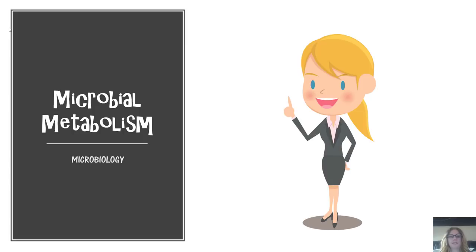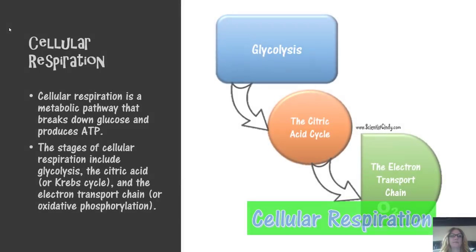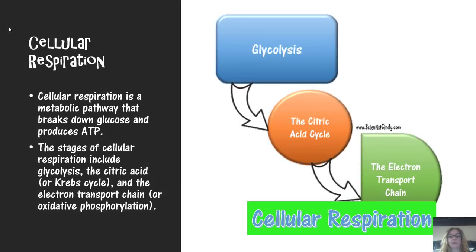This is your review for your next exam, which will be on microbial metabolism. Let's start by looking at the pathway you are probably already familiar with from your basic or high school biology courses. This pathway is called cellular respiration. Cellular respiration is a metabolic pathway that breaks down glucose to produce ATP.